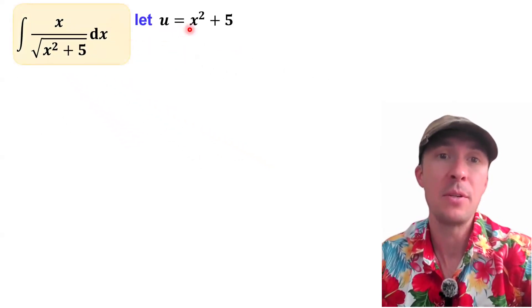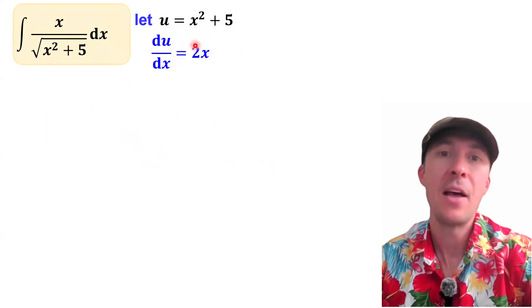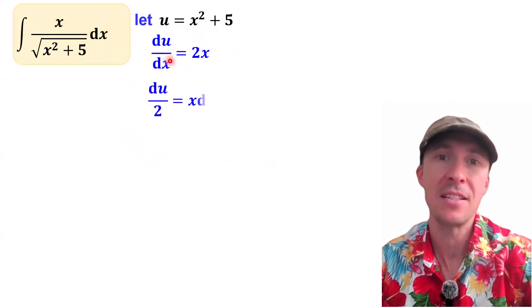So we'll do that. We'll set u equal to x squared plus 5 and then take the derivative so that du/dx equals 2x using the power rule. Now the trick is to rearrange this equation and we have x times dx here in the integrand. You see that? So we want to rearrange this to get x times dx.